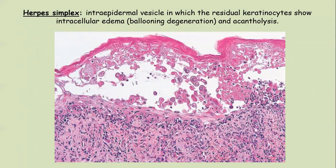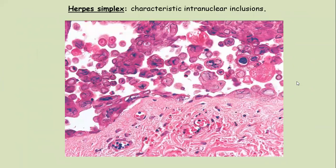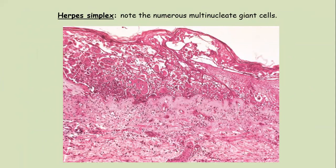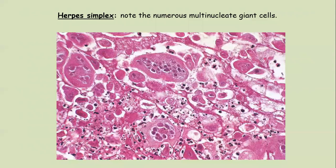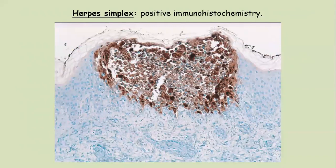The histopathological appearance of herpes virus infection shows a large intraepidermal vesicle with reticular keratinocytes showing intracellular edema, ballooning degeneration and acantholysis. This picture is similar to any acantholytic disorder, but the distinguishing features are intranuclear inclusions — seen as blue dots — and multinucleated giant cells. These giant cells are of keratinocyte origin, not histiocytes; the keratinocytes fuse with each other and viral inclusions are visible. Immunohistochemistry of herpes simplex virus is available and can be done in cases of doubt.